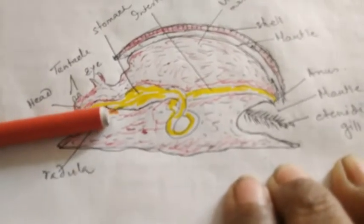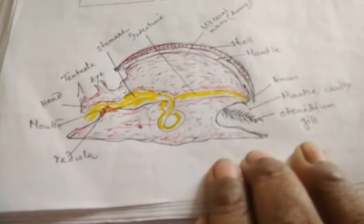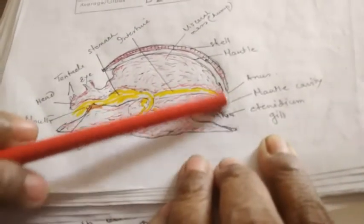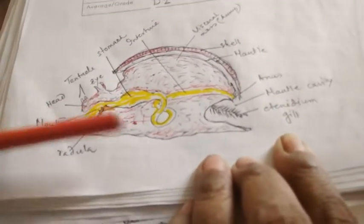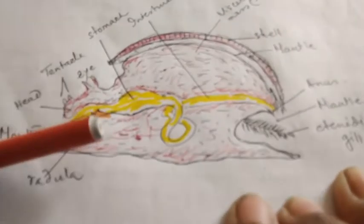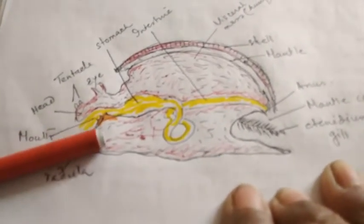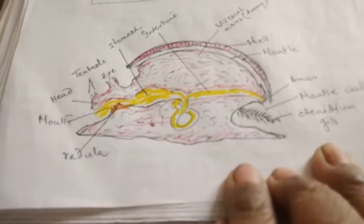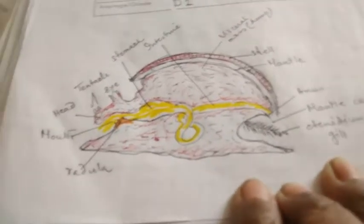This portion is the radula with the chitinous teeth and anus opens in the mantle cavity. So complete digestive system with a rasping organ called radula in the mouth which is provided with chitinous teeth. This rasping organ helps in rasping the food into small particles.